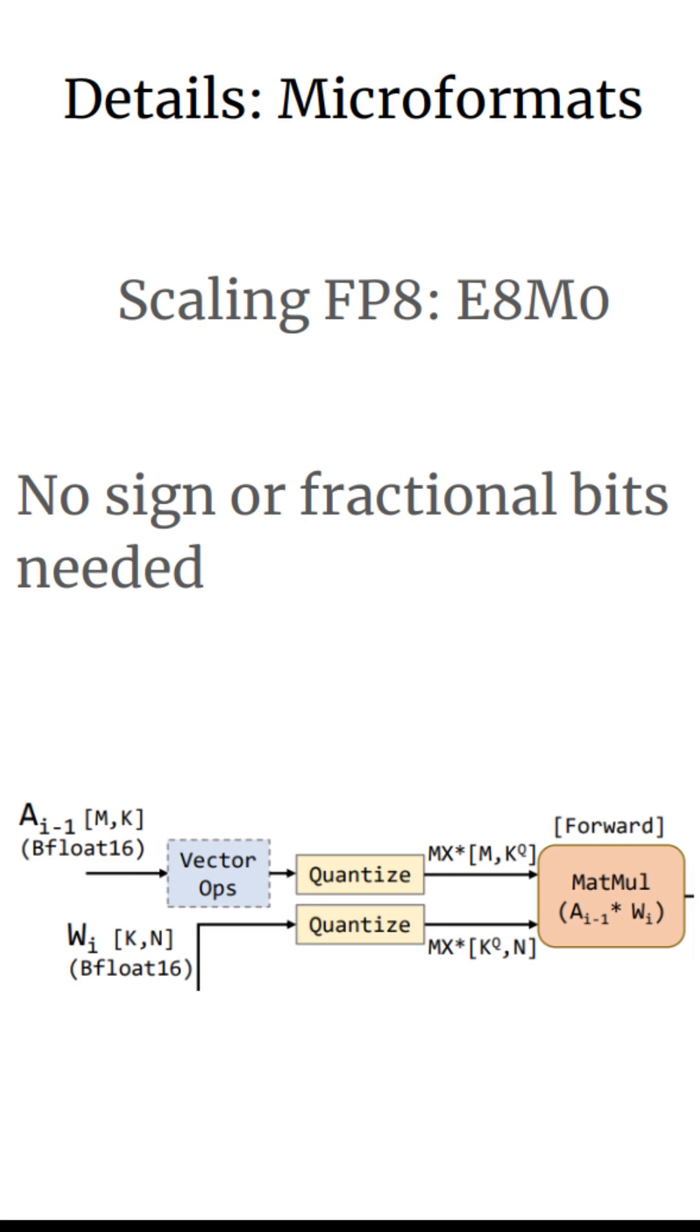We then need to do this matrix multiply, accumulate into a higher precision format, and then pass things through the neural network itself.